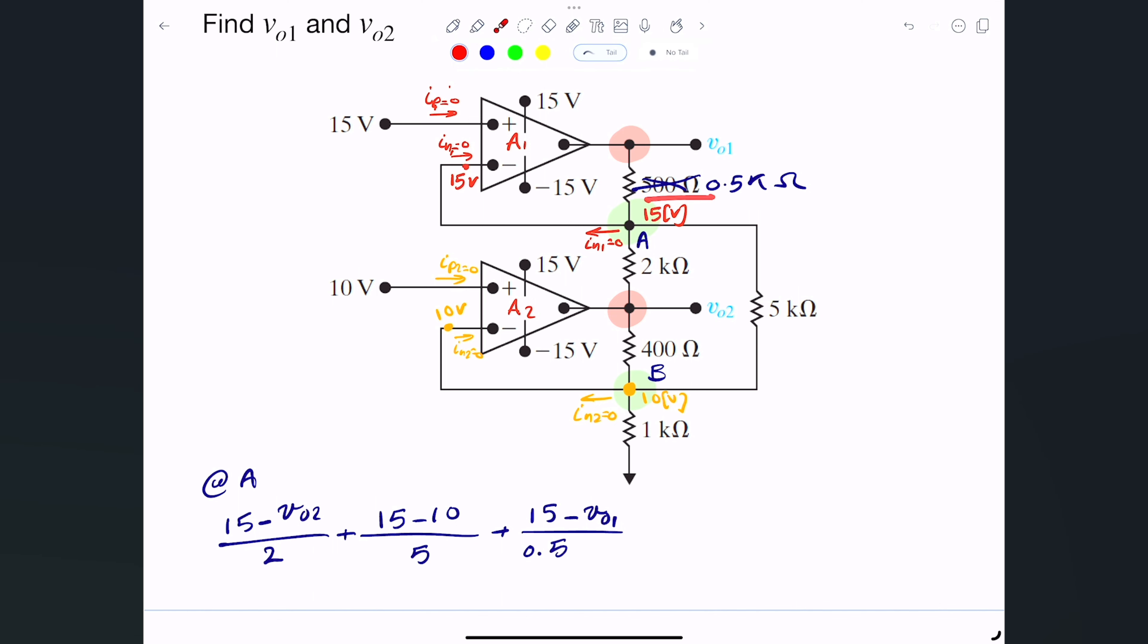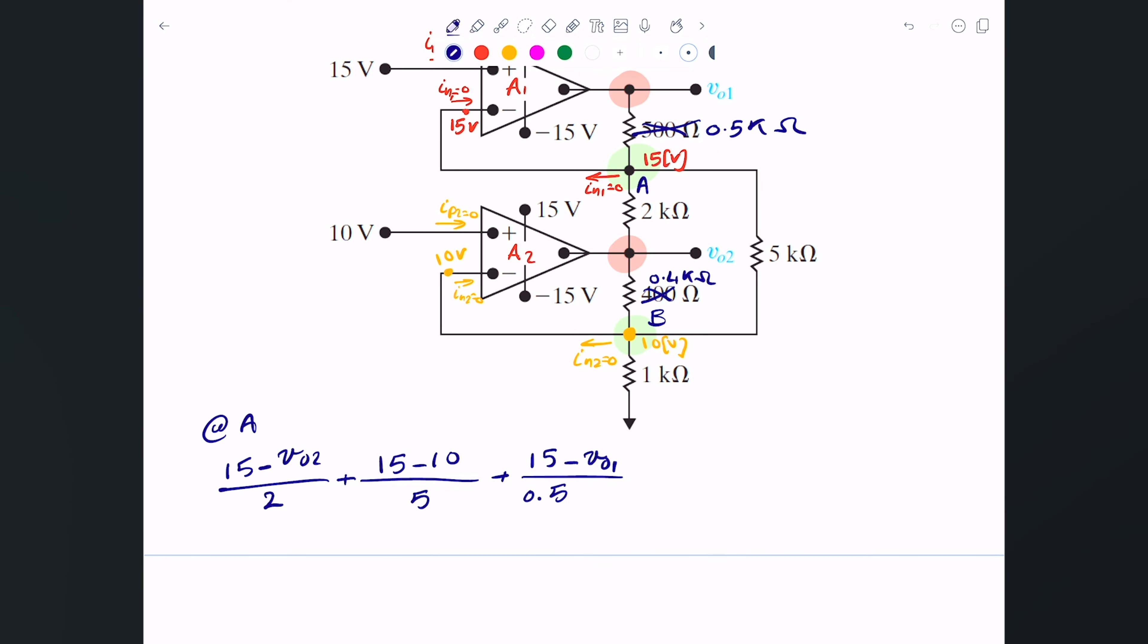This is in ohms, kilo ohms, this is in ohms. Let me make sure I highlight this one here is 0.4 kilo ohms. So this is it for point A.